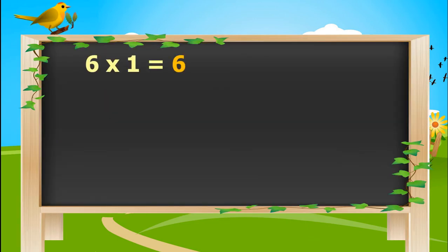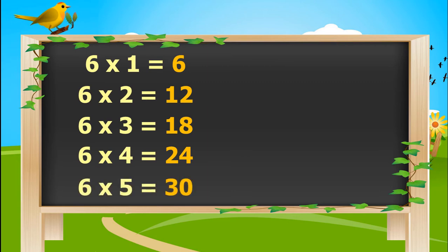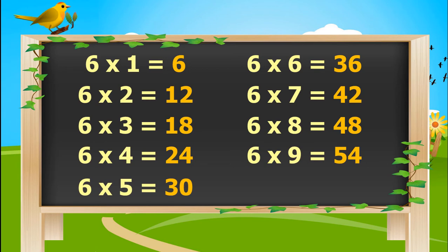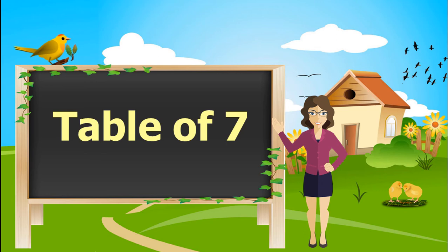6 ones is 6. 6 twos are 12. 6 threes are 18. 6 fours are 24. 6 fives are 30. 6 sixes are 36. 6 sevens are 42. 6 eights are 48. 6 nines are 54. 6 tens are 60. Let's learn table of 7.